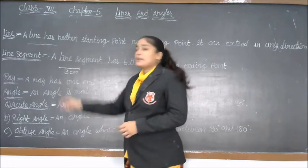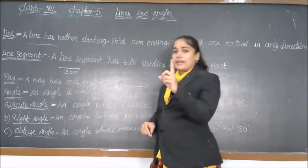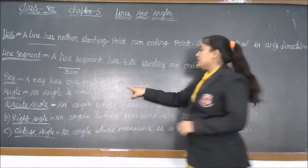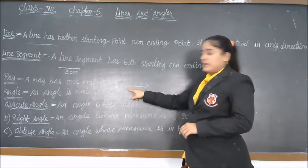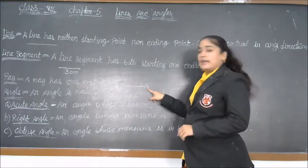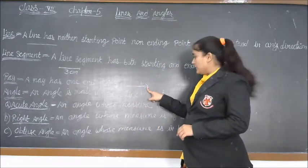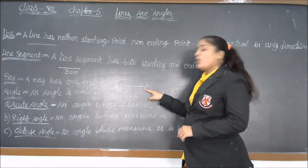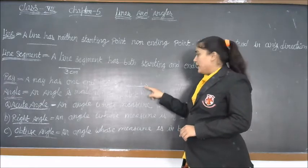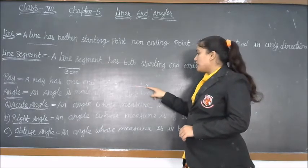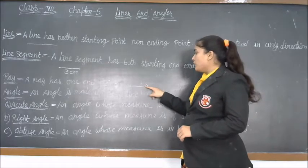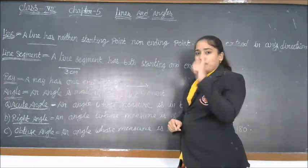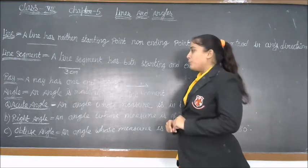Now, ray. A ray has one end point — it starts from one point and extends in one direction. A ray has only one end point.